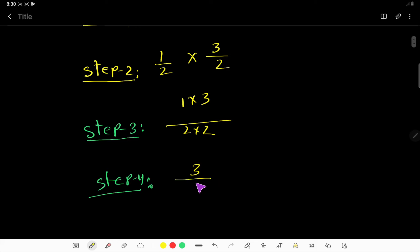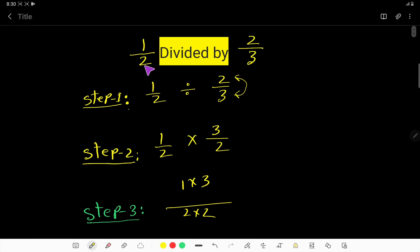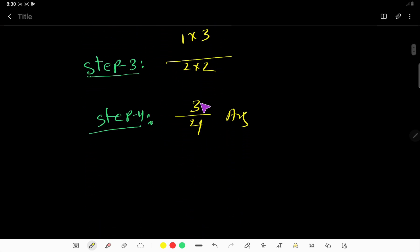3 over 4. So if you divide half by 2 over 3, then the result will be 3 over 4. That's all.